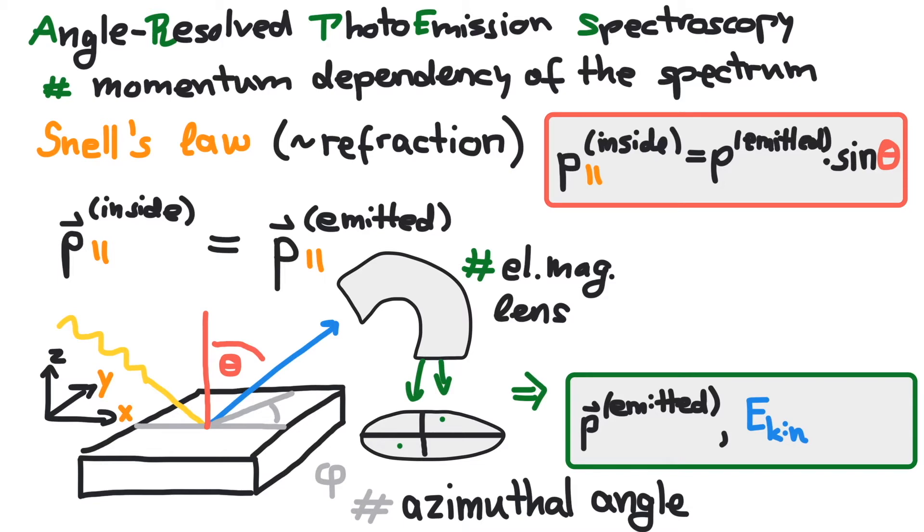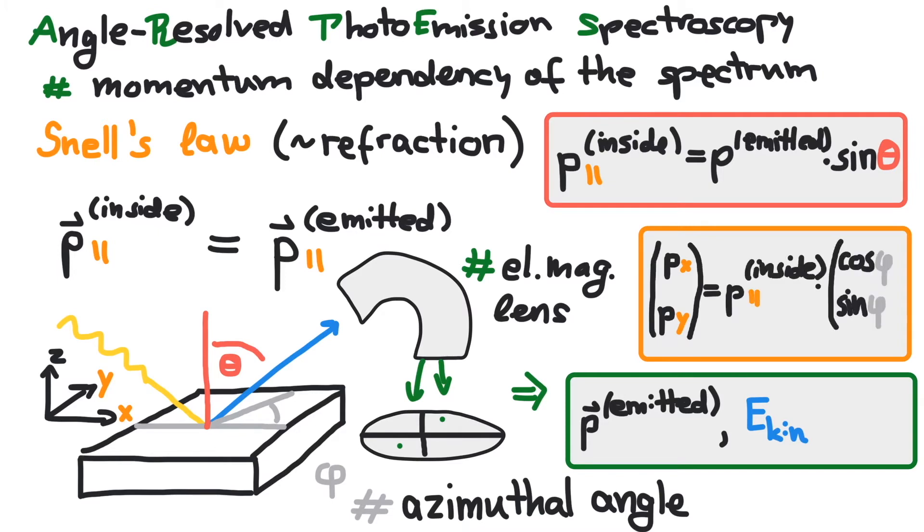The parallel plane is spanned by two directions, let's say x and y. The azimuthal angle is used to distribute the absolute value into vector components.